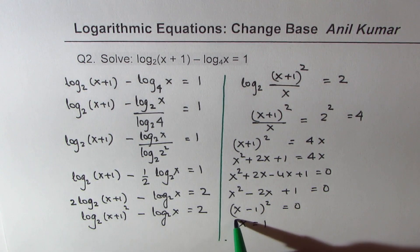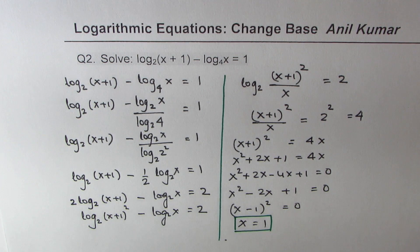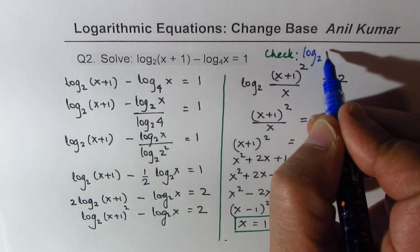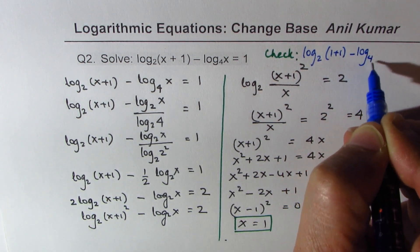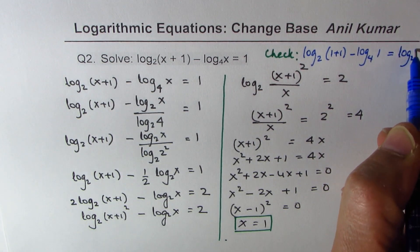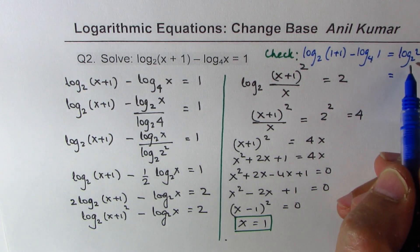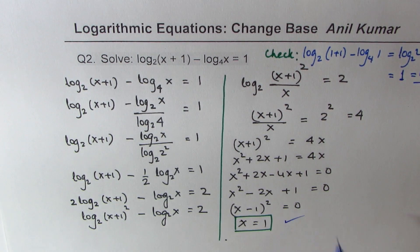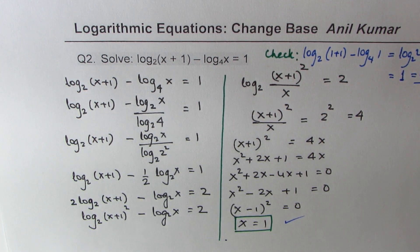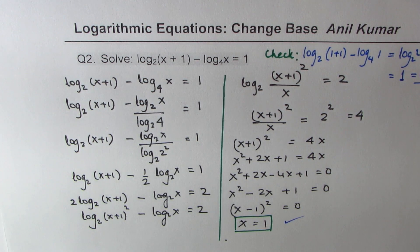This factors as (x minus one) squared equals zero, giving x equals one. To verify: substitute into the original equation — log base two of (one plus one) minus log base four of one equals log base two of two plus zero, which equals one. That matches the right side, so x equals one is correct. I'll provide a playlist with more examples and a link to the change of base formula. Thanks for watching and all the best.